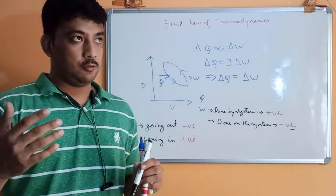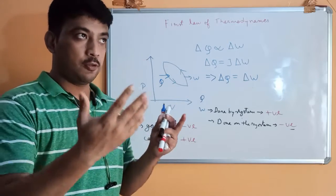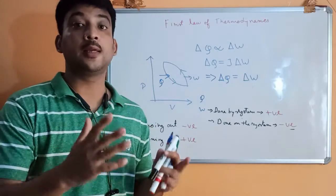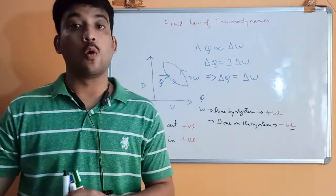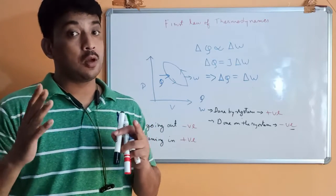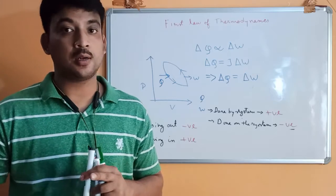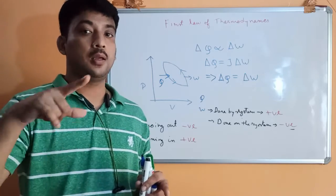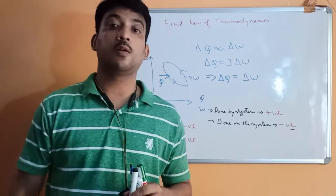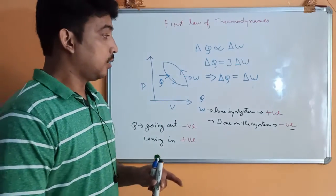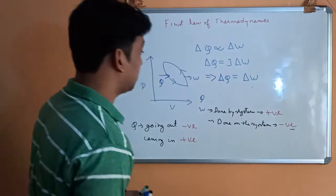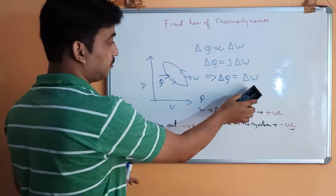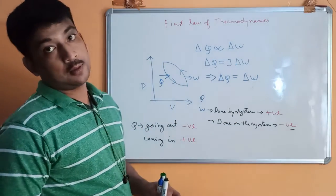That means if 100 joules of heat is applied to a heat engine, it will not be able to produce 100 joules of work. There must be some loss of heat to the surroundings — to the sink. That will be discussed while covering the second law of thermodynamics later on. But now let us discuss the first law of thermodynamics for a process. For a cycle, ΔQ is equal to ΔW.